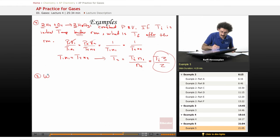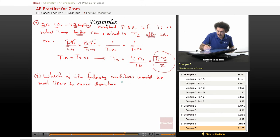Let's see. We'll do a quick multiple-choice one here. Which of the following conditions would be most likely to cause deviation from ideal behavior in a gas?